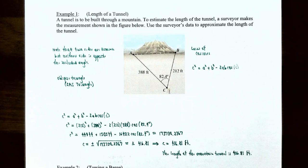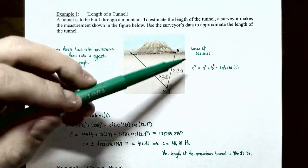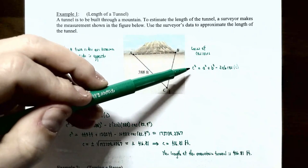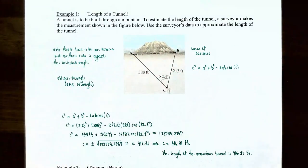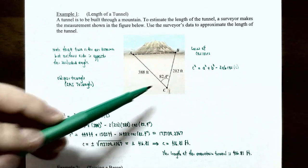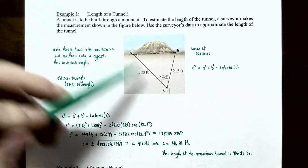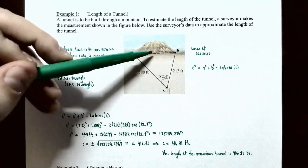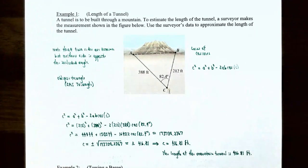We use the formula c² = a² + b² − 2ab·cos(C). We know angle C is 82.4°, and we call a = 212 feet and b = 388 feet. So c² = 212² + 388² − 2(212)(388)·cos(82.4°). Side c is opposite angle C, which is the tunnel length between points A and B.